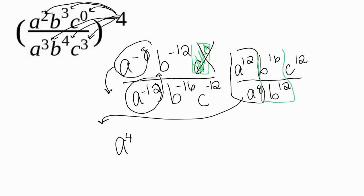So I have b to the 16th power divided by b to the 12th power. 16 minus 12 is 4. So I have b to the 4th power.